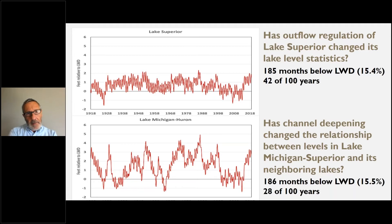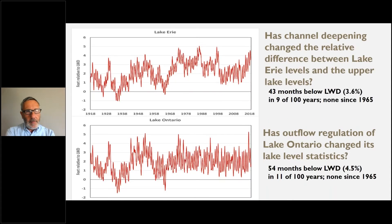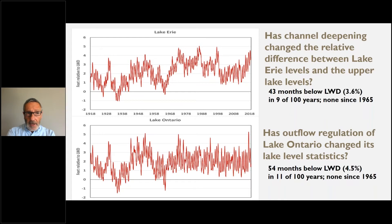Possible reasons for this might be subsequent changes to the superior outflow regulations and the deepening of interconnecting waterways. These two plots show the monthly lake levels since 1918 for the lower lakes. Over the past century, the lower lakes fell below low water datum less than 5% of the time — in only nine years for Erie and 11 years for Ontario. Furthermore, these lakes haven't been below the low water datum since 1965. This raises the possibility of adjusting upward the low water datum of the lower lakes.